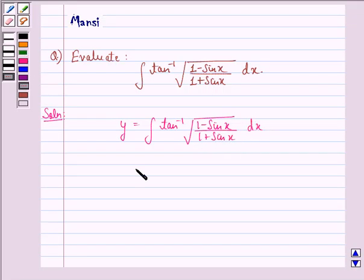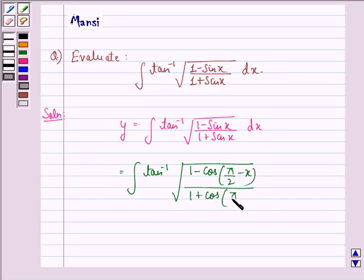This is equal to integral tan inverse square root 1 minus cos pi by 2 minus x divided by 1 plus cos pi by 2 minus x. Now we can write this because we see that sin x is same as cos pi by 2 minus x.